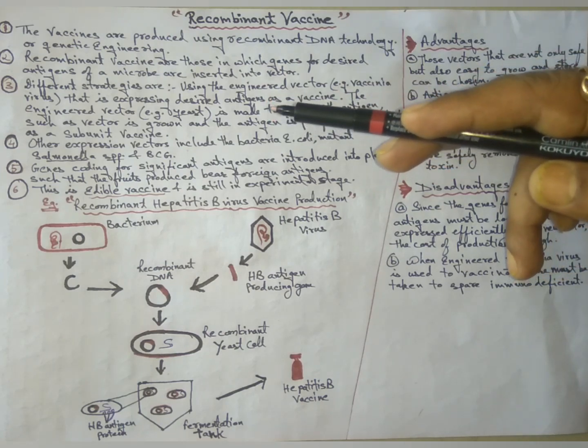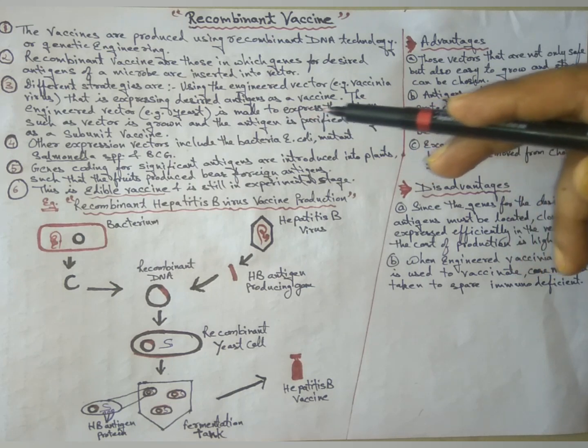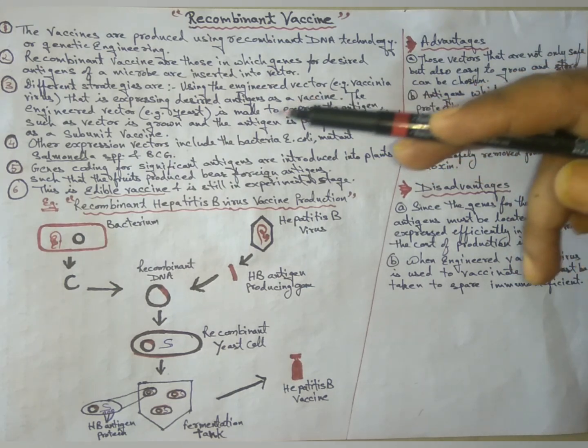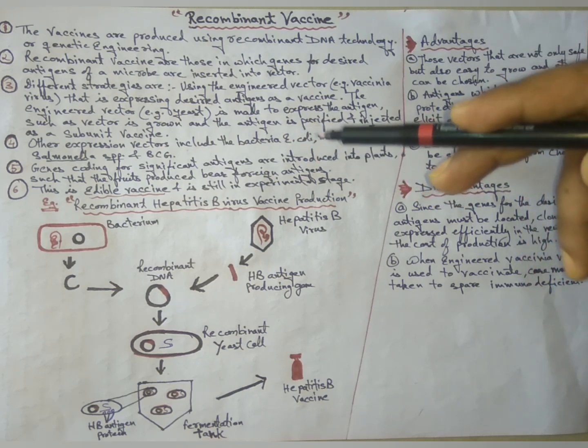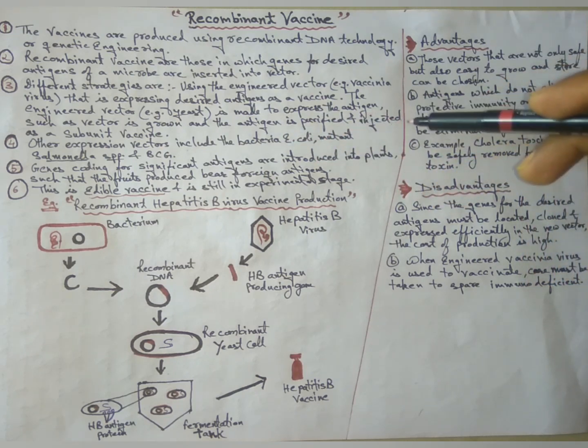The engineered vector, for example yeast, is made to express the antigen. Such a vector is grown and the antigen is purified and is injected as a subunit vaccine.